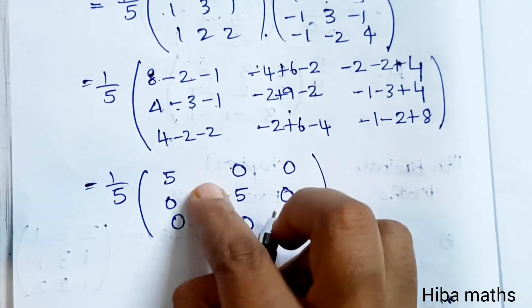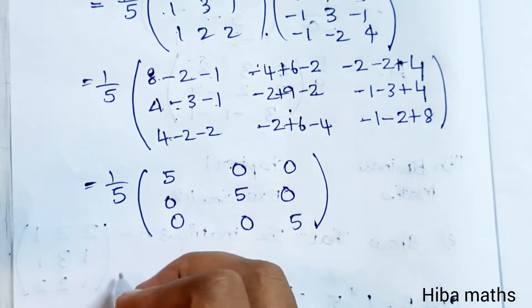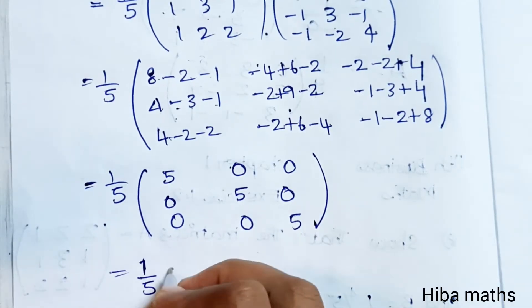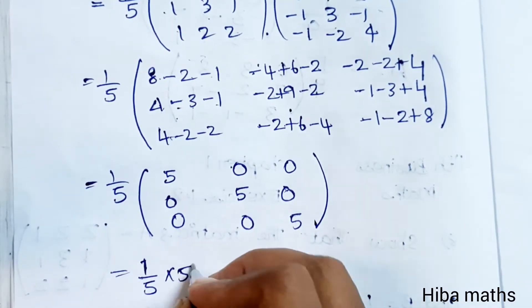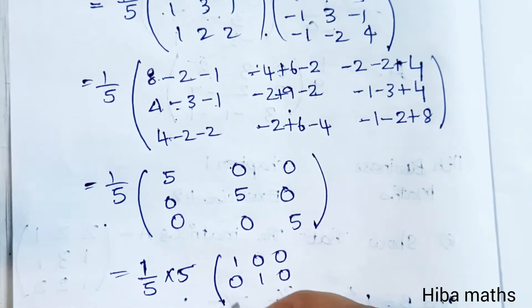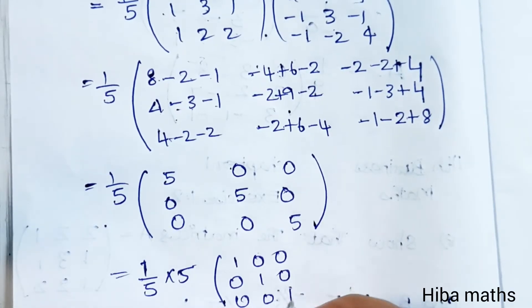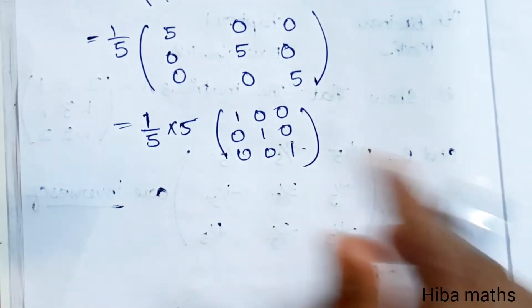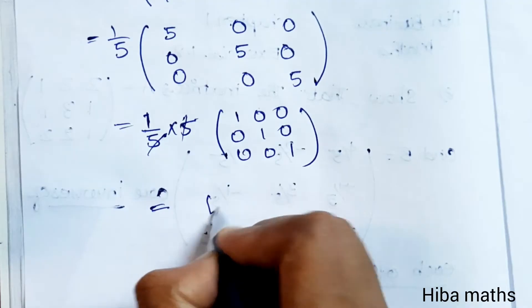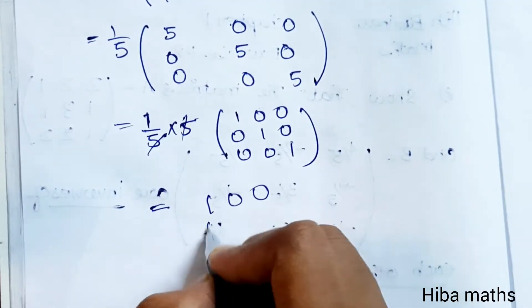We have 5 in common, so 1/5 into 5 — that equals [1 0 0; 0 1 0; 0 0 1]. The 5s cancel and we have the answer: the I matrix.